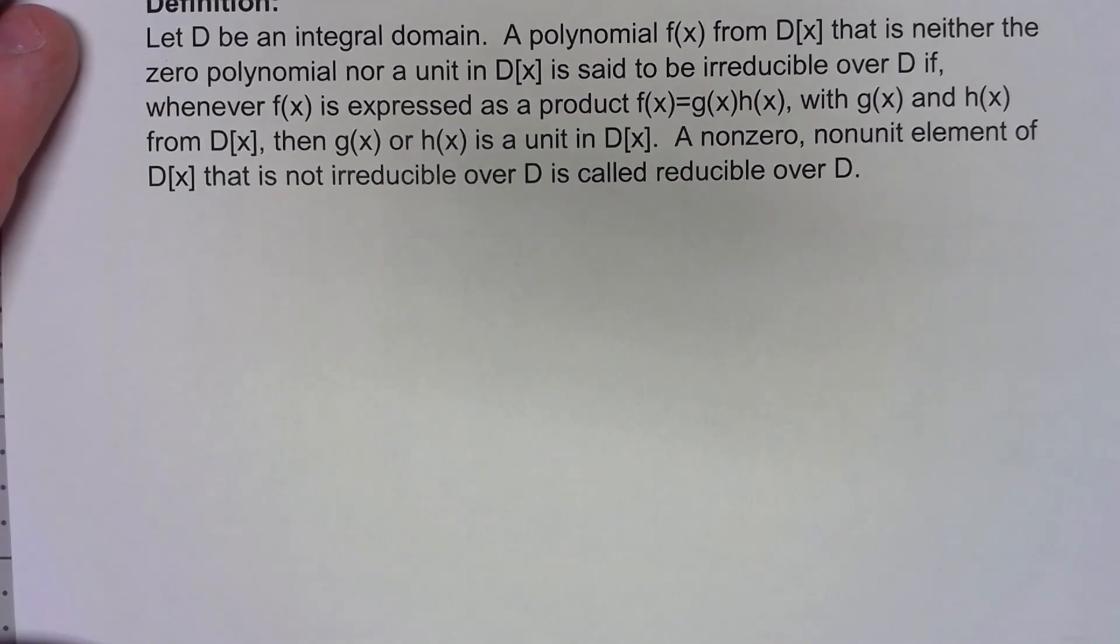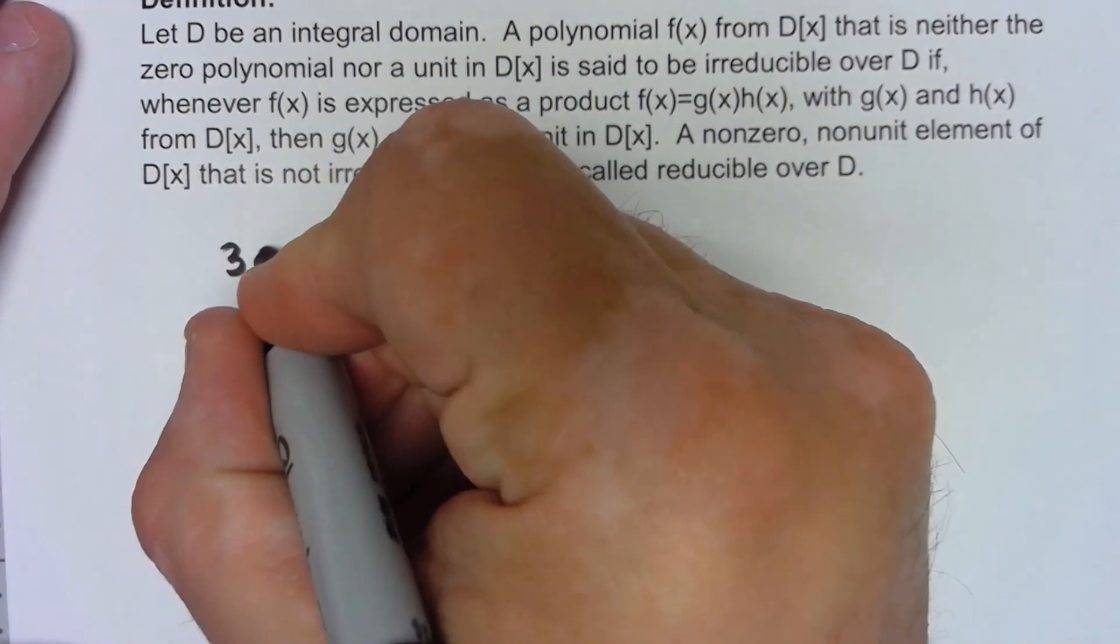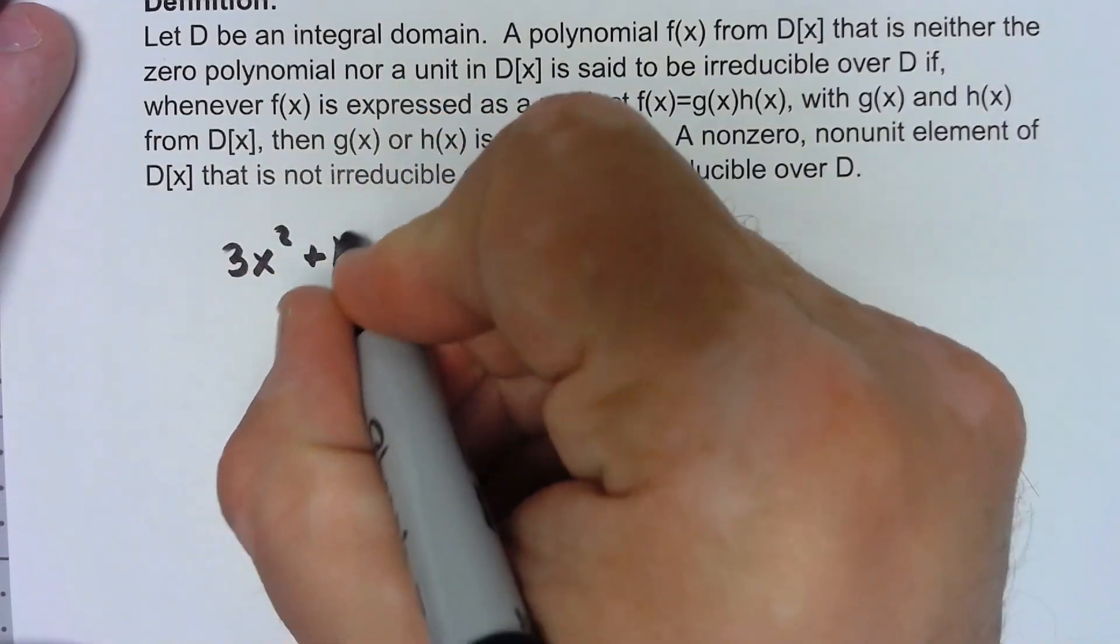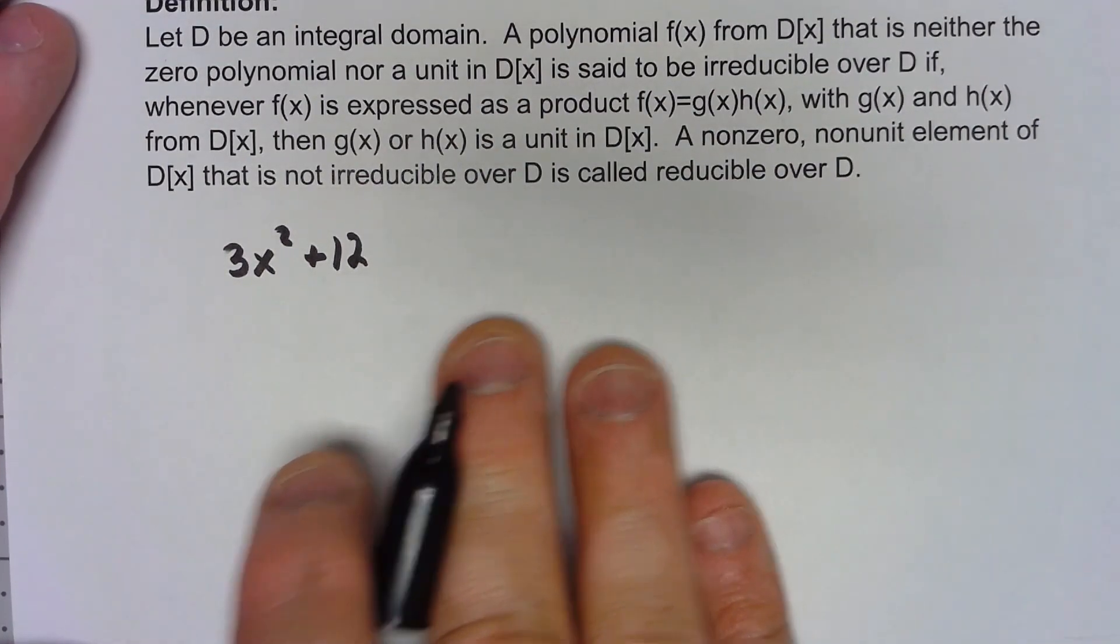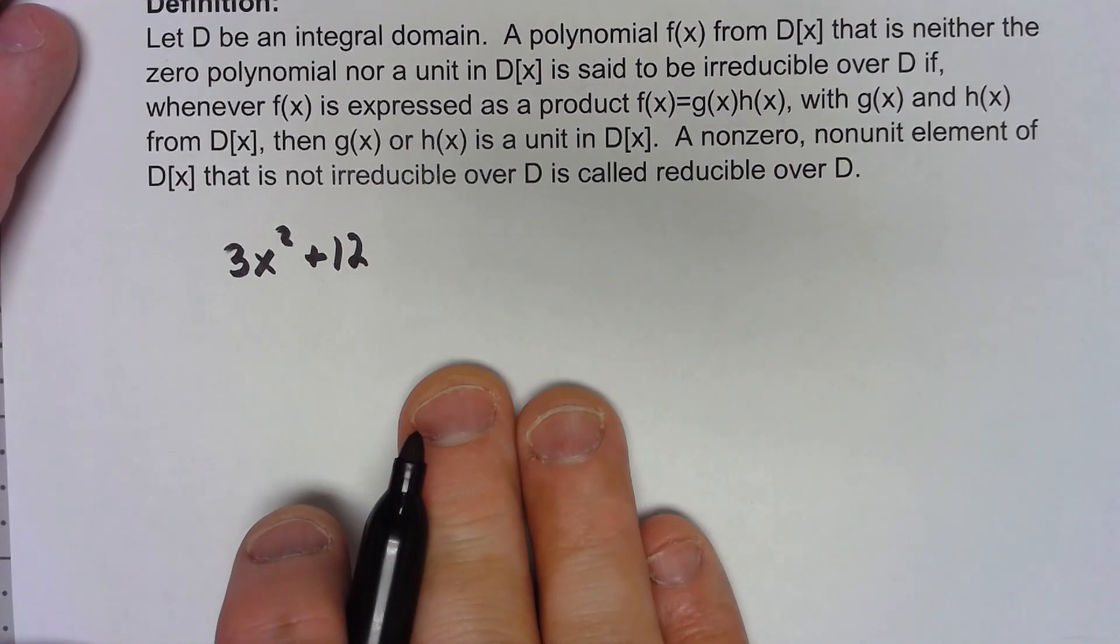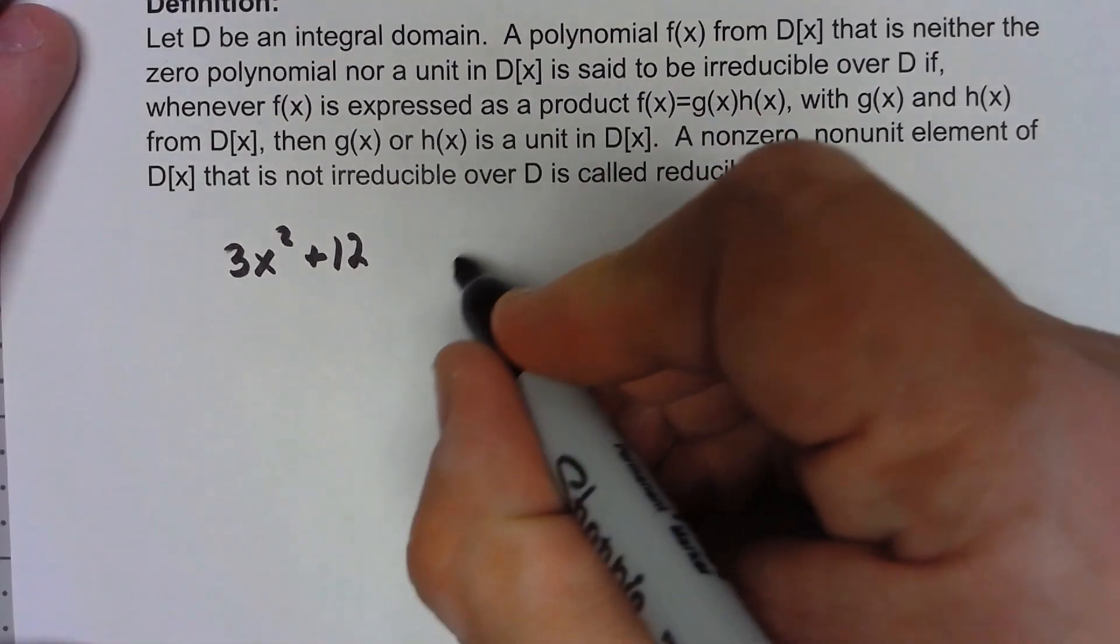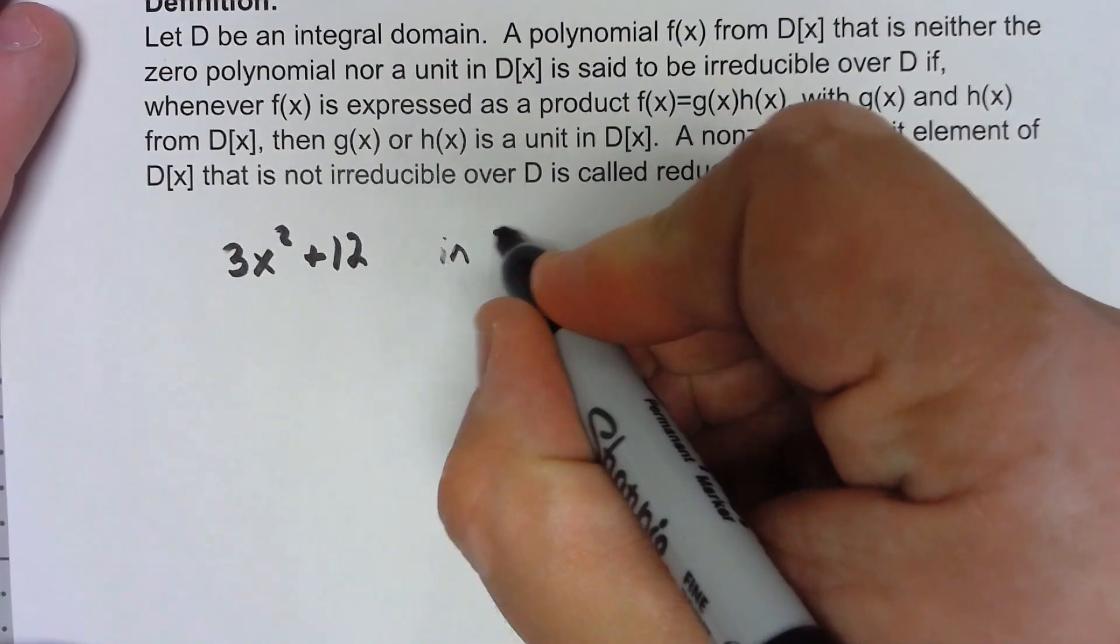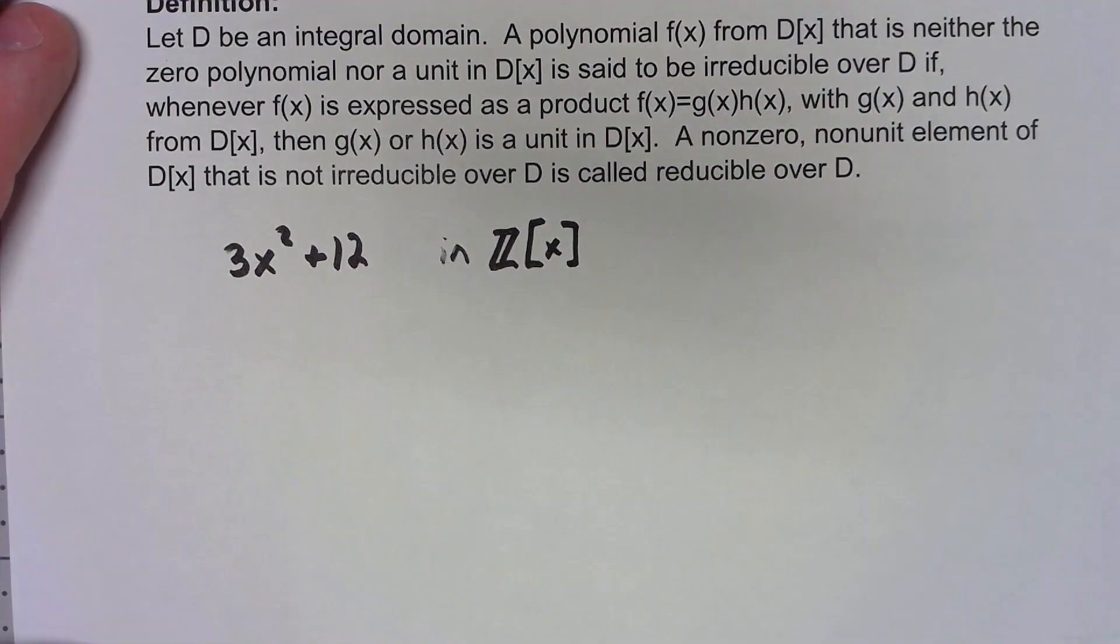So for example let's look at 3x squared plus 12. Now that's a polynomial in many different polynomial rings so let's take a look at it in a few of them. We'll start by looking at it in Z[x]. That thing is reducible.